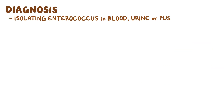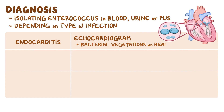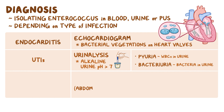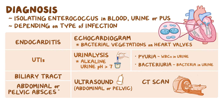Diagnosis is based on isolating Enterococcus in blood, urine, or pus cultures depending on the type of infection. With infective endocarditis, an echocardiogram might show bacterial vegetation on the heart valves. With UTIs, urinalysis shows alkaline urine pH above 7, pyuria — white blood cells in the urine — and bacteriuria. An abdominal or pelvic ultrasound or CT scan can diagnose biliary tract infections as well as abdominal or pelvic abscesses.